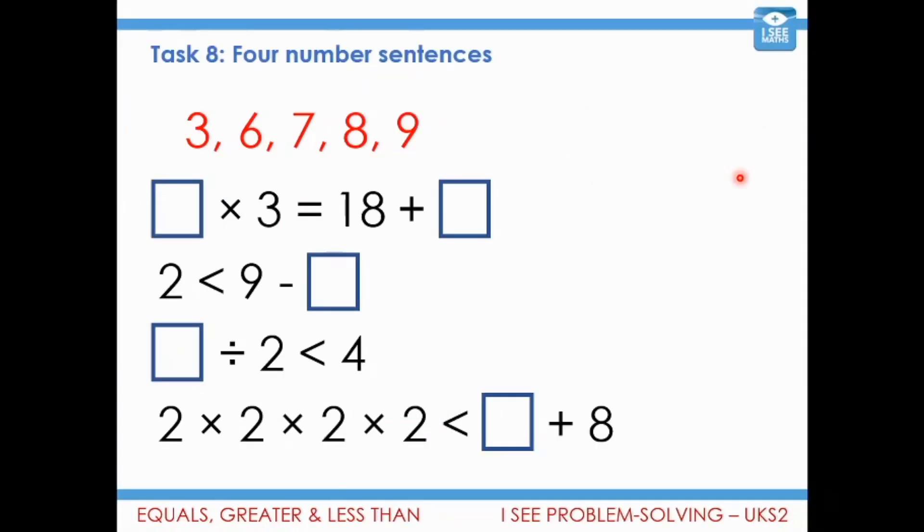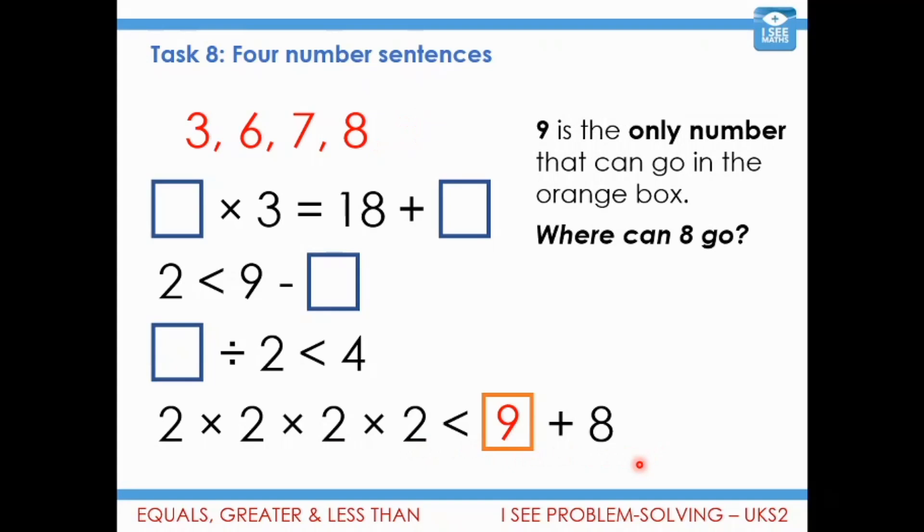So let's see if we can unpick some of the logic here. So I'd start off by thinking, well, which number can go in the orange box, the box I've just made orange? And actually, there's only one. So if I do 2 times 2 times 2 times 2, that gets me to 16. So this side has got to be more than 16. It has got to be the 9. 9 is the only number that can go in that orange box.